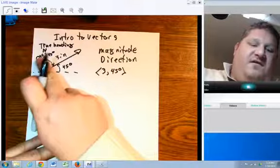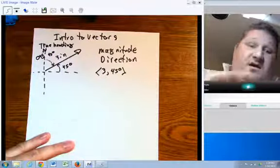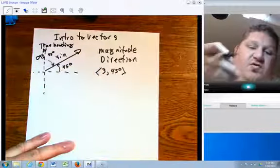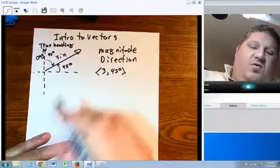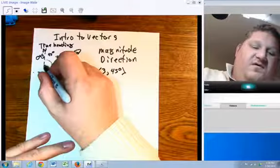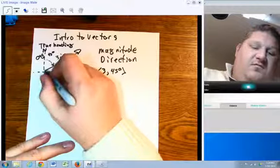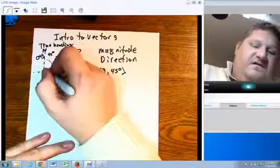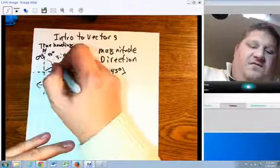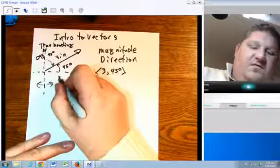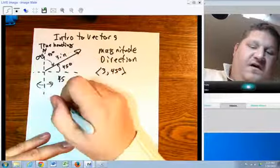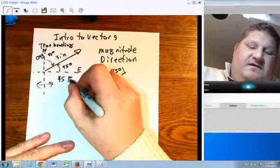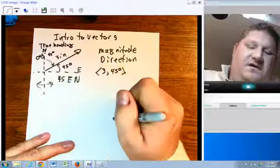It could be something that we call quadrant measurements. Quadrant measurements are always measured to the left or right of the north-south axis. In this case, we would say it is 45 degrees east of north.